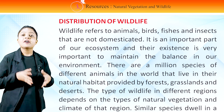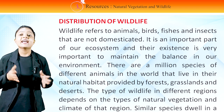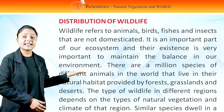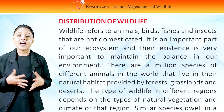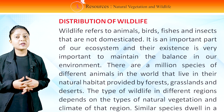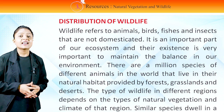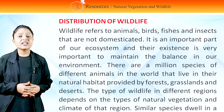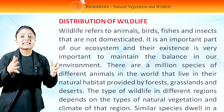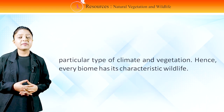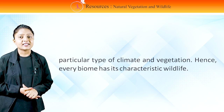Wildlife refers to animals, birds, fishes and insects that are not domesticated. It is an important part of our ecosystem and their existence is very important to maintain the balance in our environment. There are a million species of different animals in the world that live in their natural habitat provided by forests, grasslands and deserts. The type of wildlife in different regions depends on the types of natural vegetation and climate of that region. Similar species dwell in a particular type of climate and vegetation; hence, every biome has its characteristic wildlife.